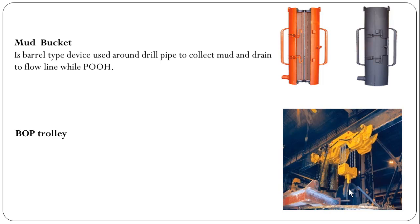Mud bucket. The mud bucket is a barrel-type device used around the drill pipe to collect the mud and drain it to the flow line while pulling out of hole. In case of wet pulling — when we break the connection of the tubular like drill pipe or heavyweight drill pipe, we will see mud coming out from the stand after breaking the connection; this is called wet pulling. To avoid mud splashing all over the rig floor, we make up this barrel-type device after disconnecting the connection, then pick up the stand and the mud goes inside this barrel, which has a hose connected that guides the mud to go inside the flow line.